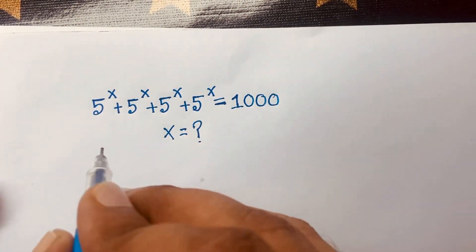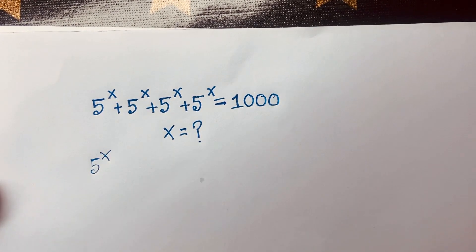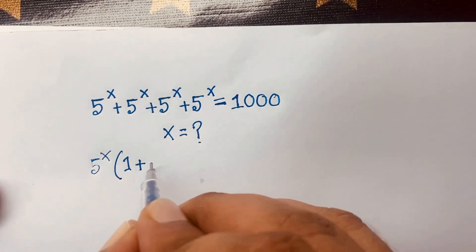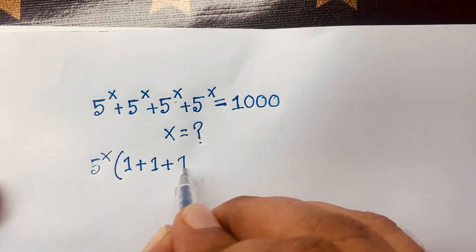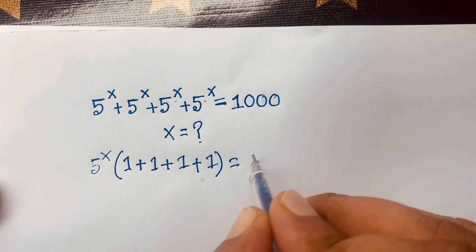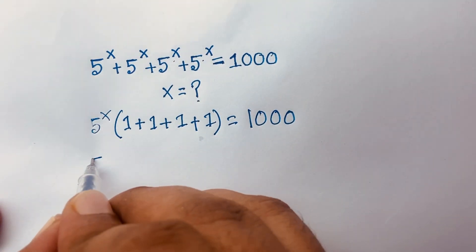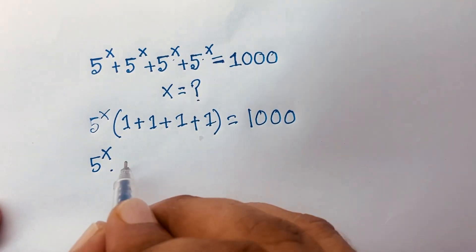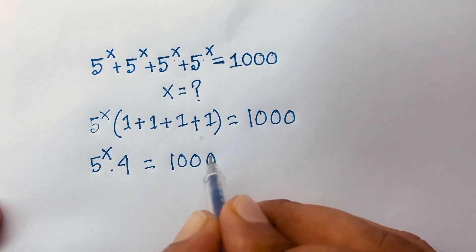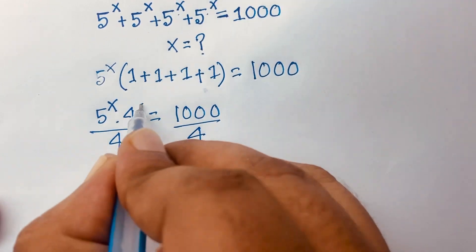First of all, 5 to the power x is common, so we factor it out: 5 to the power x times (1 plus 1 plus 1 plus 1) is equal to 1000. That gives us 5 to the power x times 4 equals 1000.